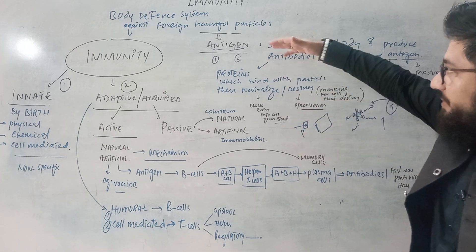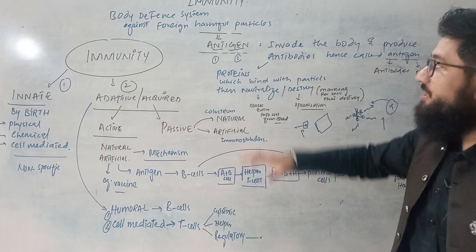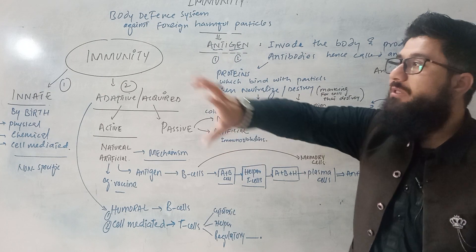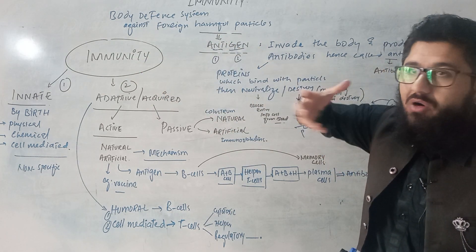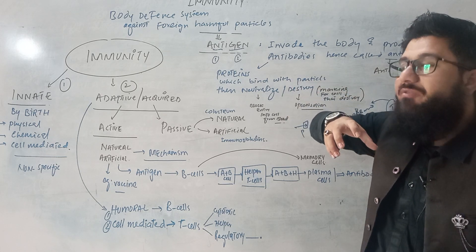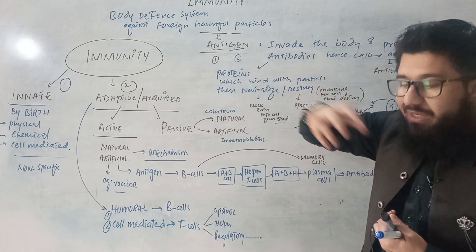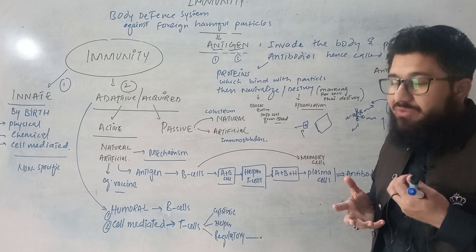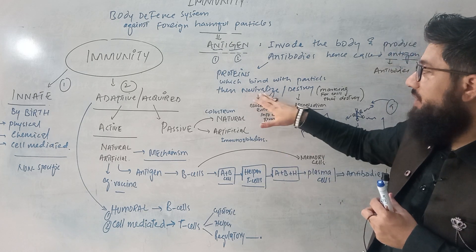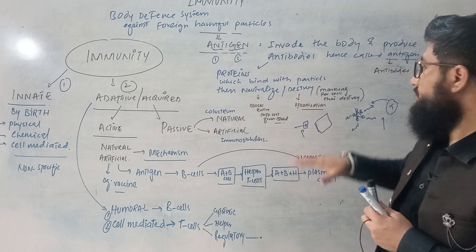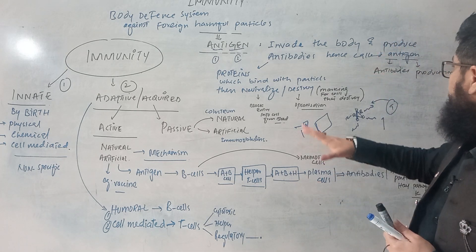Quick review: antigens are particles that enter the body from outside. Because of those antigens, our body starts producing antibodies. These antibodies fight against the antigens by neutralizing them, destroying them via opsonization, or by other mechanisms.